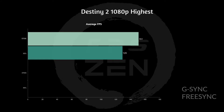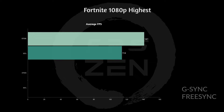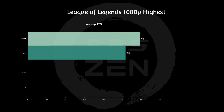In Destiny 2 at 1080p highest settings, the 9700k gets 151 FPS average with a 95th percentile low of 129 FPS — again a great title for G-Sync or FreeSync. In Fortnite at 1080p highest settings, average FPS was 141 with a 95th percentile low of 114 FPS, also a great title for G-Sync or FreeSync.